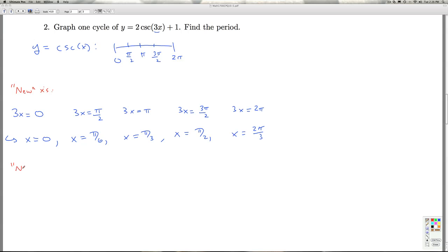Now I'll get the new y's. For x = 0, I look at y = 2csc(3·0) + 1, which is 2csc(0) + 1. Since cosecant of something is 1 over sine of that thing, and sine of 0 is 0, the cosecant of 0 is undefined. That means we've got a vertical asymptote here.